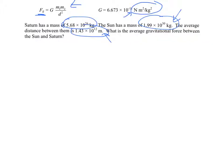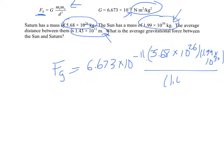But then all you're going to do is plug in. So the average gravitational force between the Sun and Saturn is 6.673 times 10 to the negative 11 times M1. So let's say that's Saturn. It doesn't really matter. 5.68 times 10 to the 26 times the Sun, 1.99 times 10 to the 30th